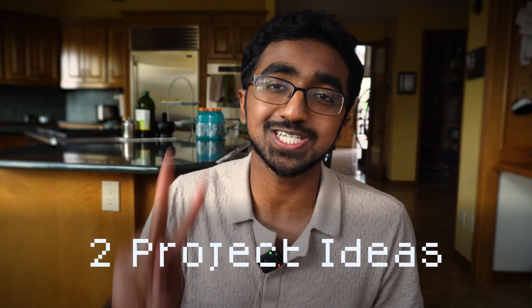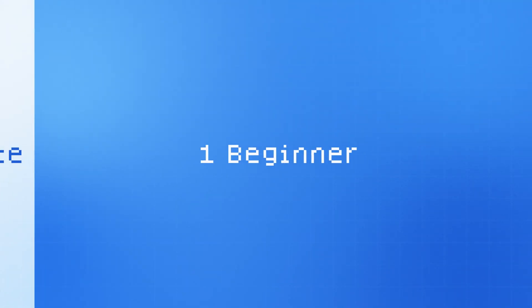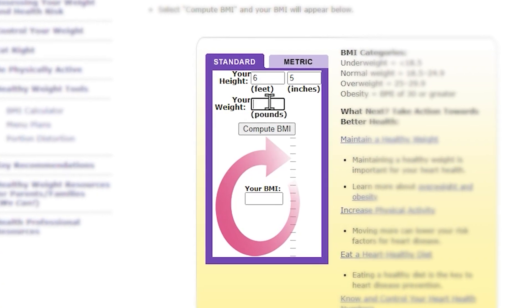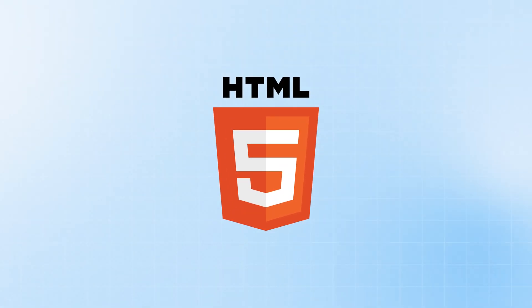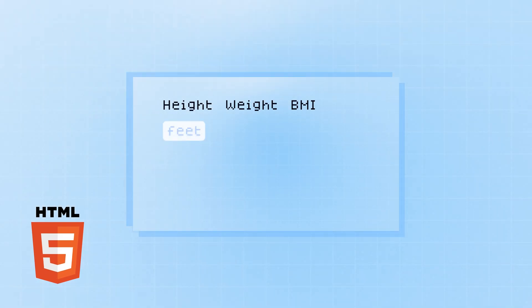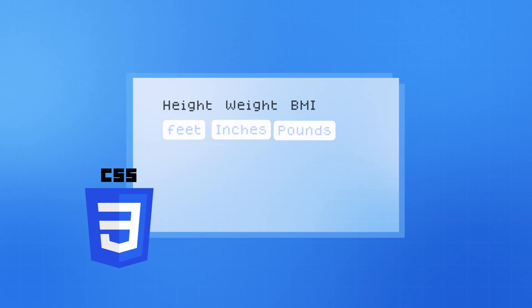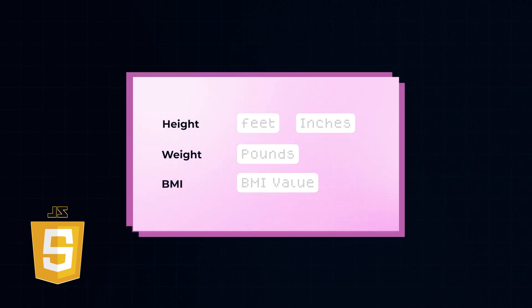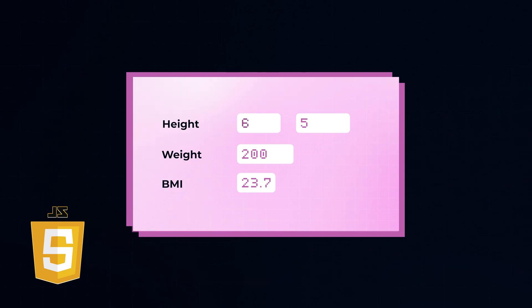I want to offer two project ideas to practice — one beginner, one intermediate. For the beginner level, implement a BMI calculator. BMI, or body mass index, is a health metric based on height and weight. You ask the user to input their height and weight, perform a calculation, and display a result. Start with HTML to create text and input fields, add CSS to align the fields and change the font and color scheme, then add JavaScript so that on change of the input fields, new values are stored, a new BMI is calculated, and the result is rendered. You can even add unit tests to your JavaScript functions.